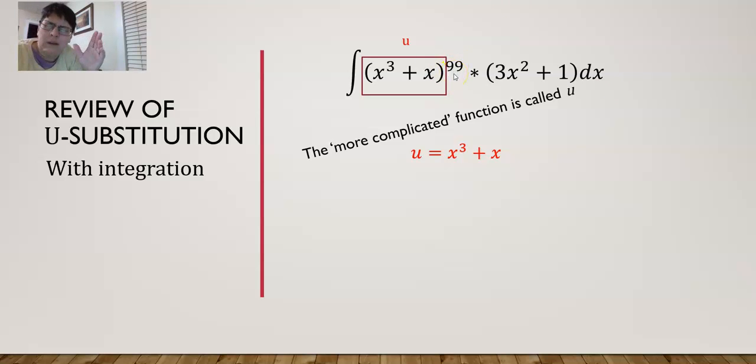The numerical power, because that's really easy to take care of. But the x³ + x is more complicated than 3x² + 1, which just happens to be the derivative of this.